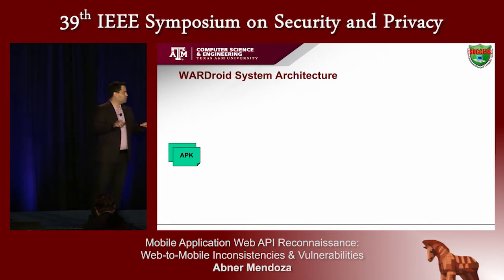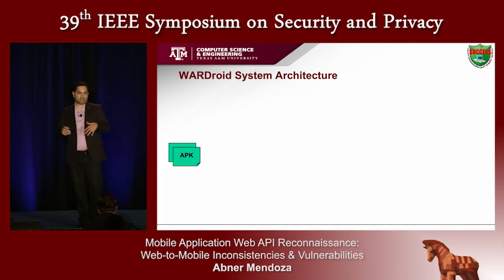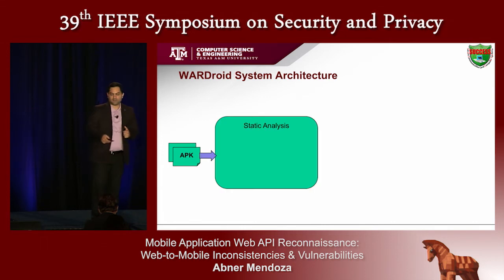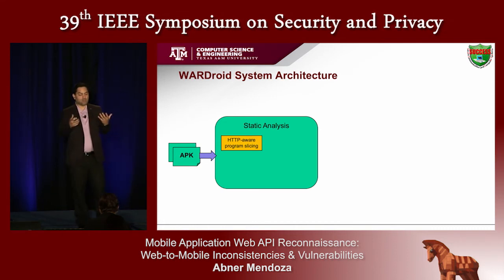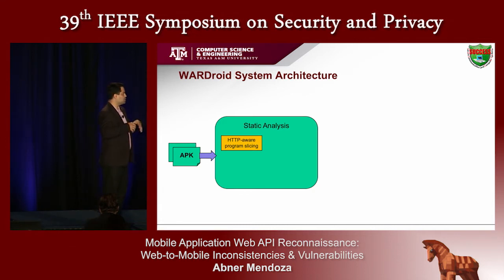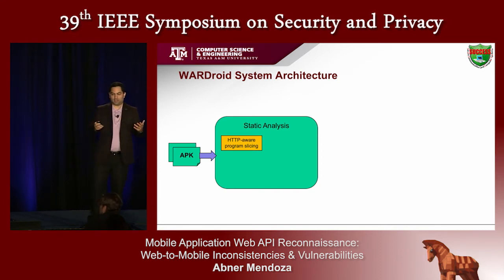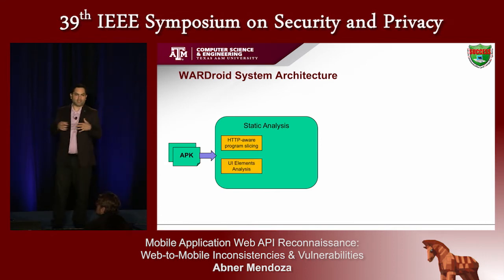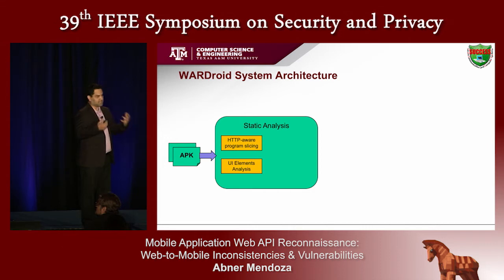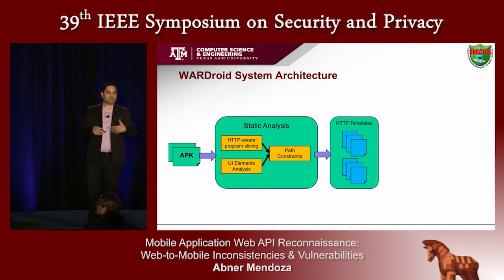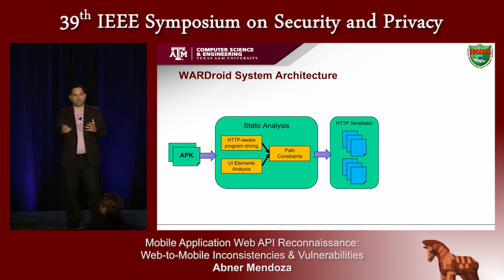Let me walk you through the overall architecture of Wardroid. It takes Android APKs as input and feeds them into a static analysis module. Our static analysis module primarily uses HTTP-aware program slices, which reduce the search space for analyzing the app to just those methods and their dependencies that initiate HTTP communication. We additionally augment that dependency graph with UI element analysis to get more idea of data types and constraints on input data. This gives us a set of path constraints, and using those path constraints we can build HTTP templates — guides for how valid requests to the API server might be constructed by the app.